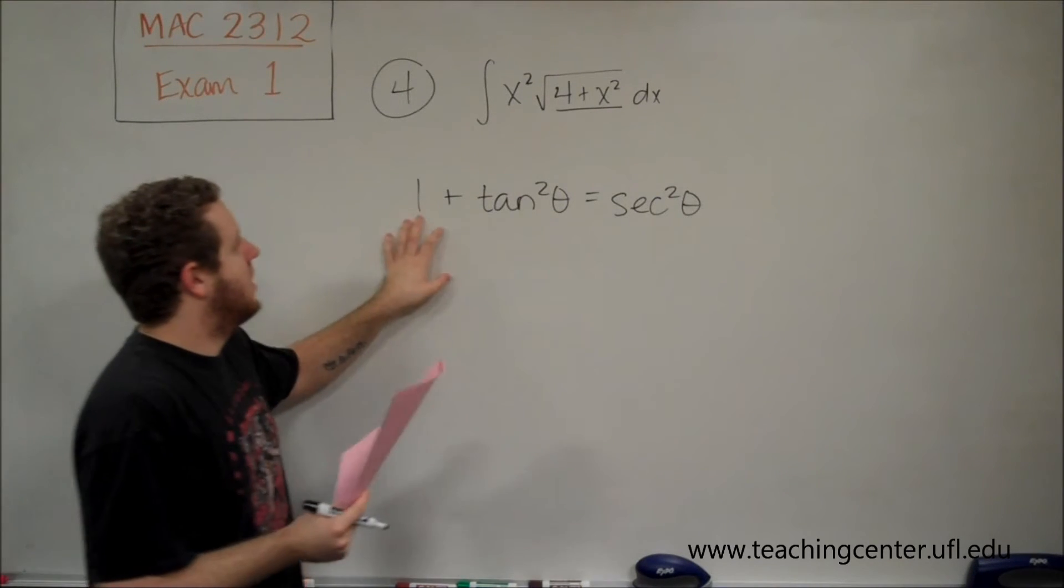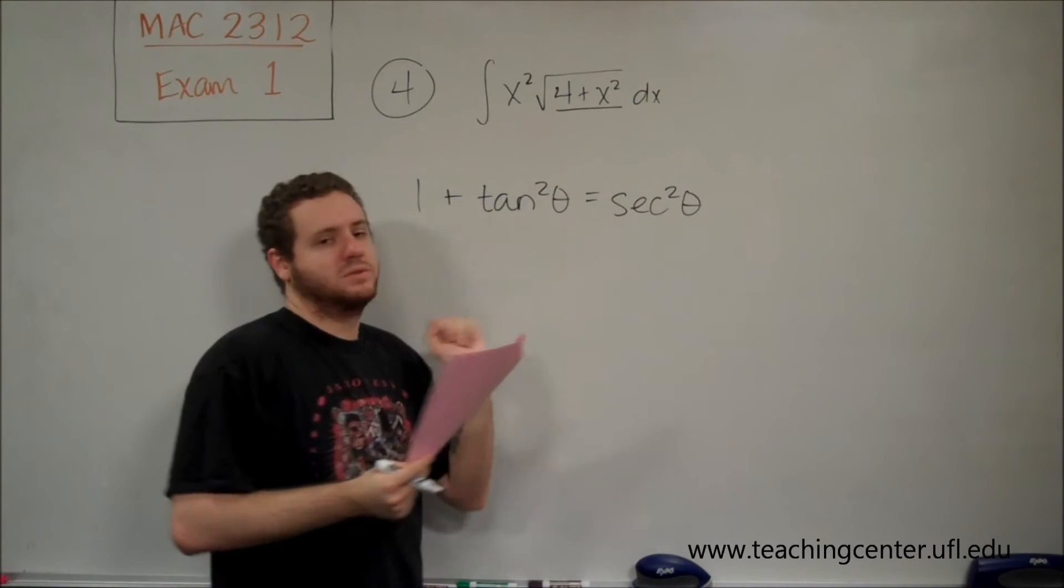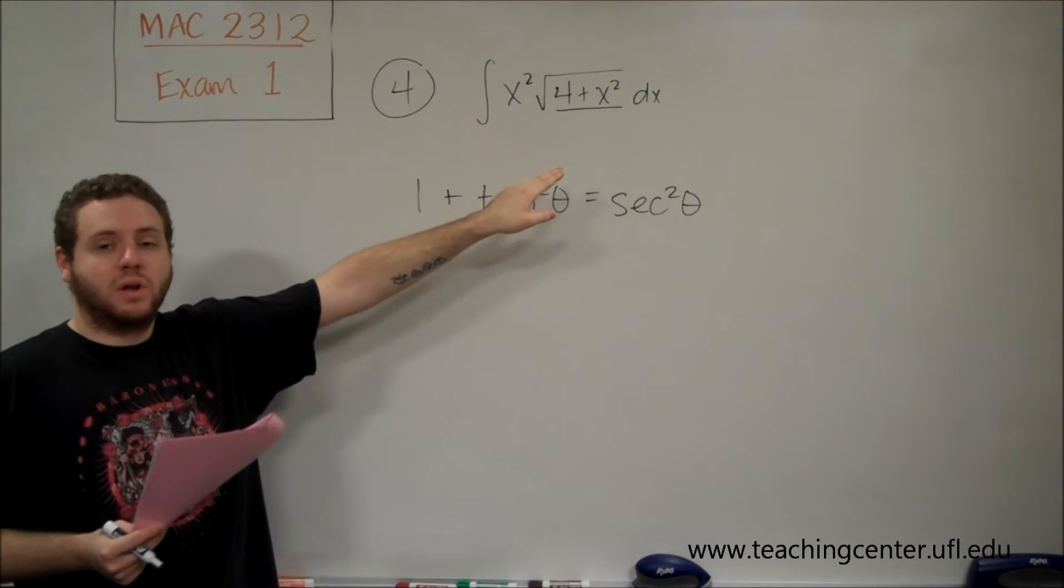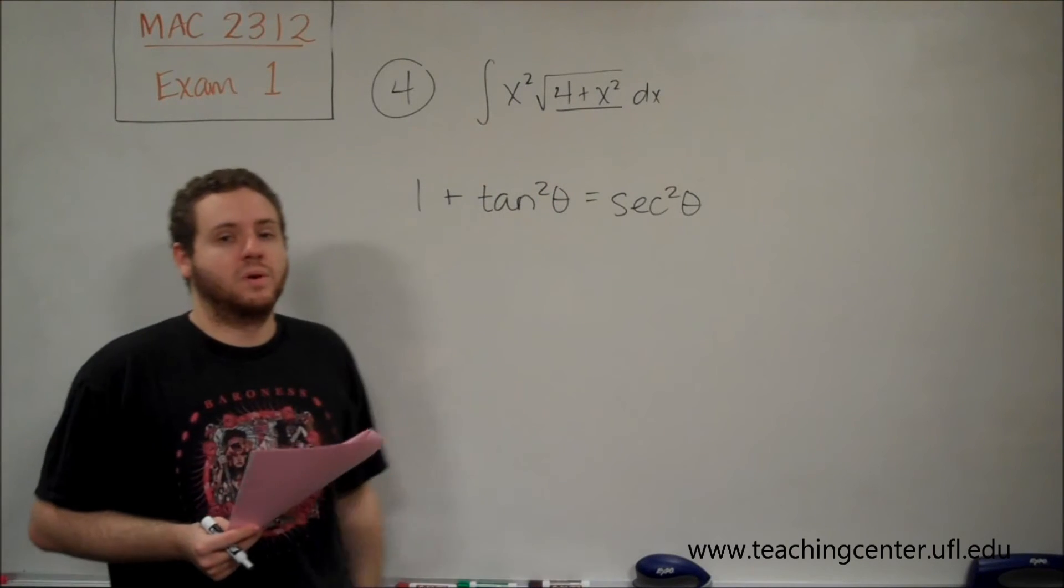So this is of the form constant plus variable squared. You can see here that this matches up and we're going to want our x to be some form of tangent theta.